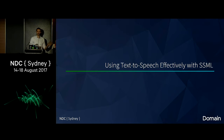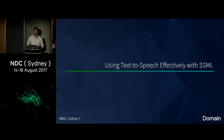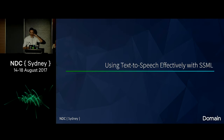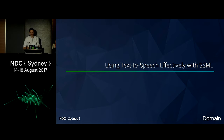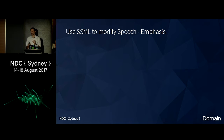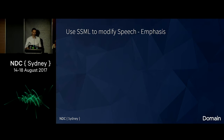That was a simple scenario, but every now and again Alexa needs a little hint on how to pronounce things. To do that you can use something called SSML — Speech Synthesis Markup Language. It's just a little bit of markup that you drop into the text of your responses to give it a hint of how to say things.